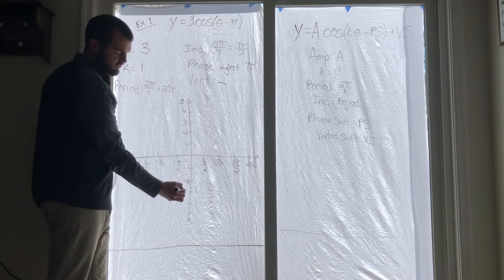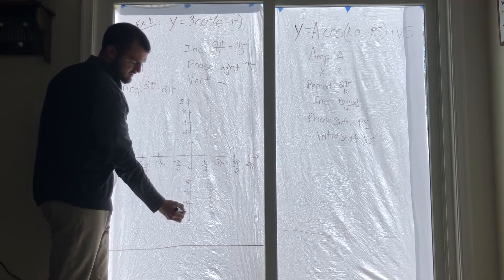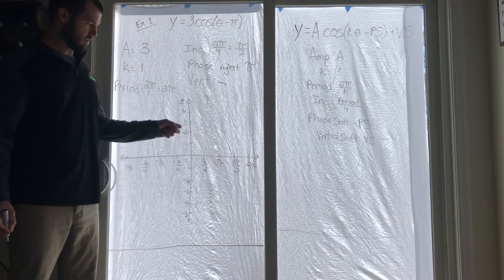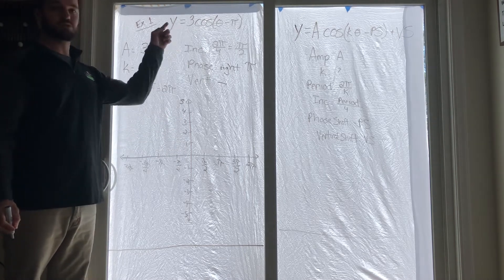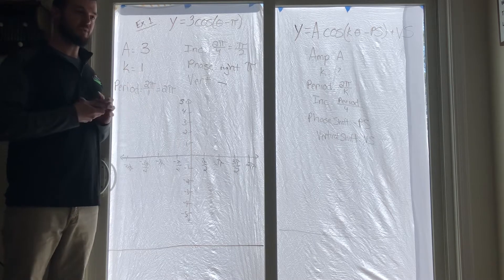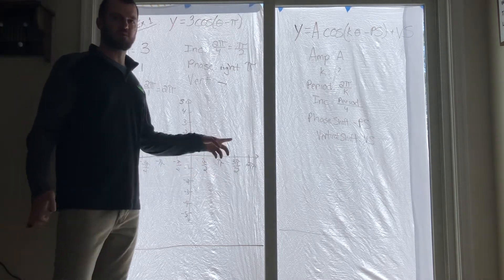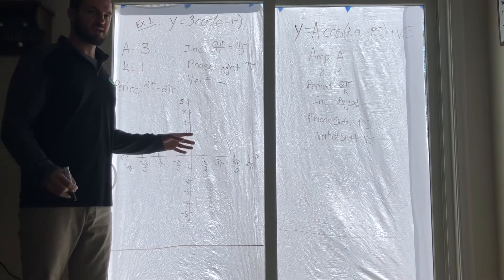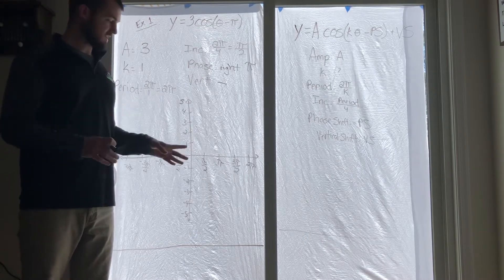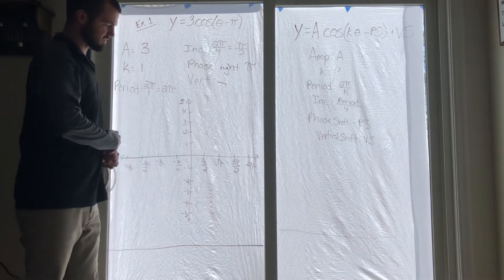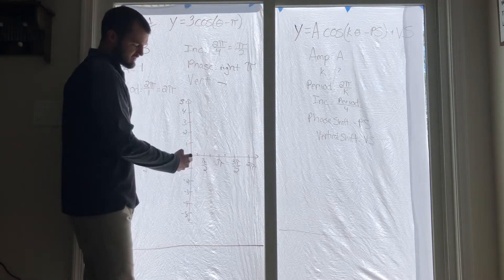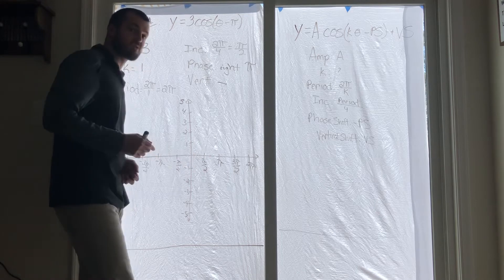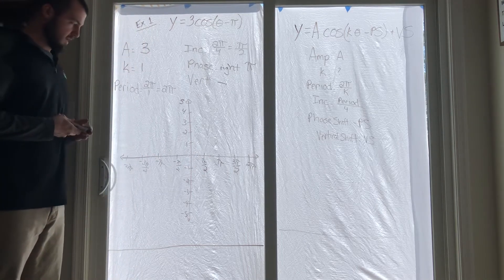You need to label your y-axis also. Some of you chose to go by halves — like a half, one, one and a half, two — and depending on what the amplitude is you may want to change it, so be careful. Also, the graph paper you get: the spaces are kind of tight, so spread them out a little bit. Instead of cramming pi over two and pi together, spread it out and go every other space if you want. There's enough room for you to do that.